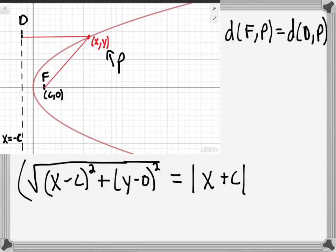As we square both sides, the left side becomes: (x - c)² + y² = x² - 2xc + c² + y². The square root goes away when we square.